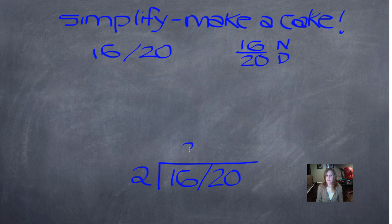And the first answer I see is 2. 2 goes into 16 eight times, and 2 goes into 20 ten times. That's the second layer of my cake.